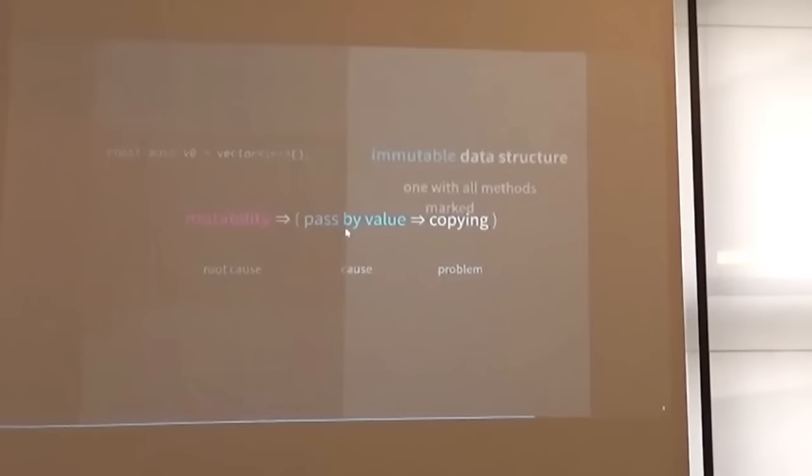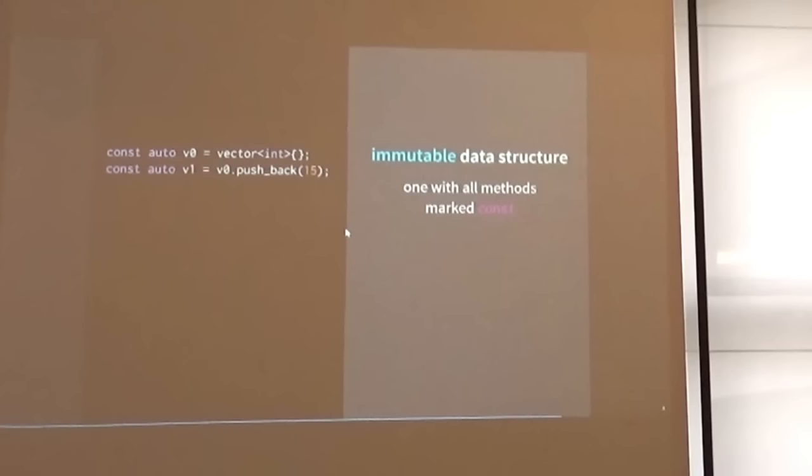So if we attack the problem, we can start attacking it with the data structures, which are the foundational building block of which we build our data model. We can have an immutable data structure in which all our methods are marked const. So we can have an imaginary vector that we can mark const, and we can still modify it. We just don't modify it in place. When we do pushback, we get a new version of the vector with the element that we want in it.